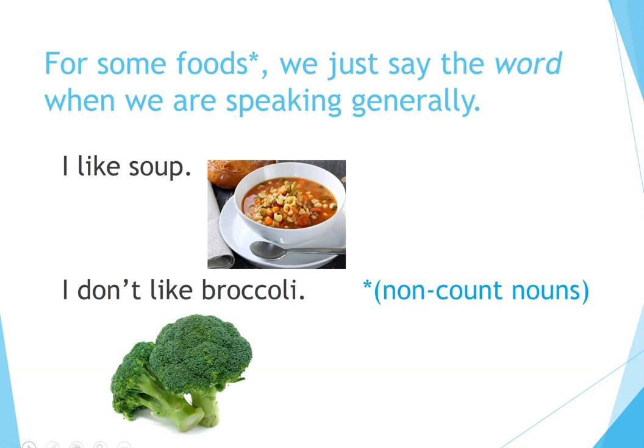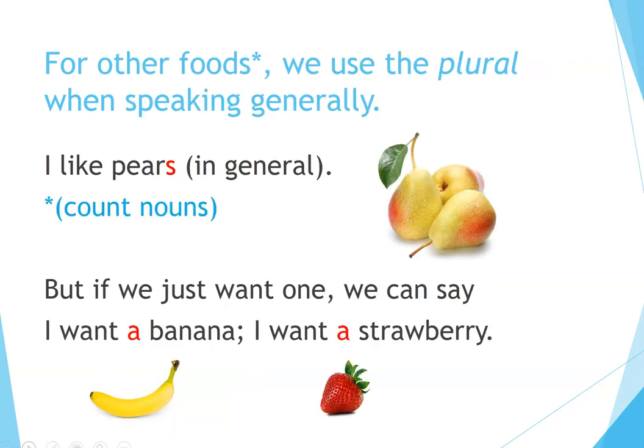For some foods, we just say the word when we are speaking generally. For other foods, we use the plural when speaking generally — for example, 'I like pears.' In general, these are count nouns. But if we just want one, we can say, 'I want a banana' or 'I want a strawberry.'